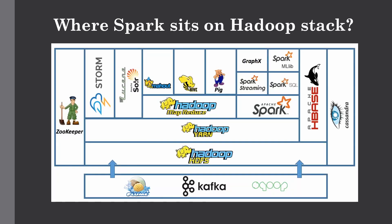Now we will discuss where exactly Spark sits in the Hadoop ecosystem. We already have an idea where Hive resides on top of core Hadoop services. Spark is a good alternative for MapReduce — it is a processing layer that uses YARN for resource allocation and HDFS for storing data. Apache Spark can also run standalone, or you can use it on an existing Hadoop cluster by utilizing YARN and HDFS core services.